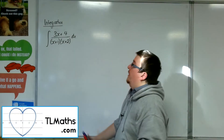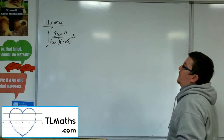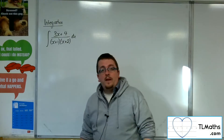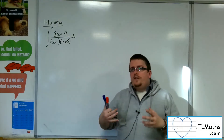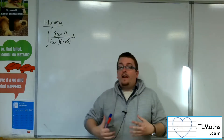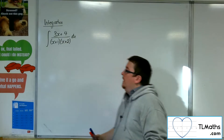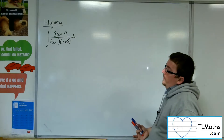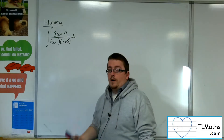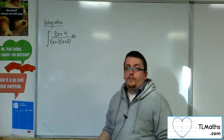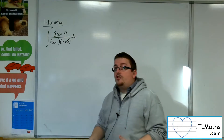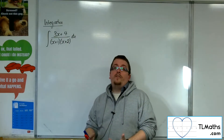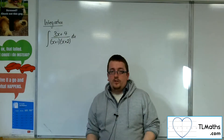Let's say I wanted to integrate (3x + 4) over (x + 1)(x + 2). I can't integrate it as it currently stands. So what I've actually got to do first is to break it up into partial fractions. This section is all about splitting up into partial fractions and then integrating.